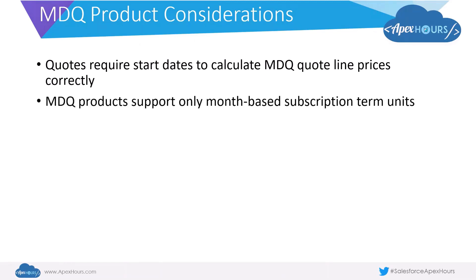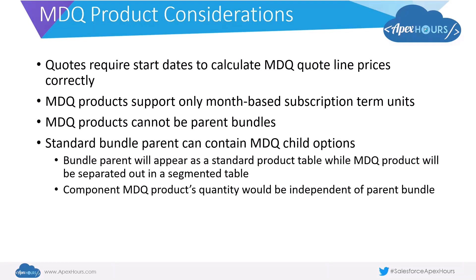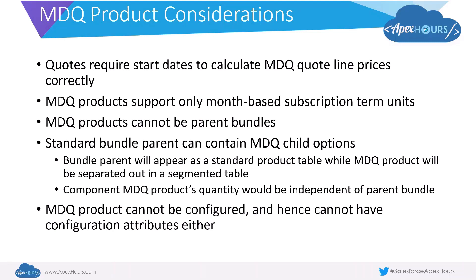Next, a very important consideration: MDQ products cannot be parent bundles, which means you cannot have product options associated with them. They must be either standalone products or a child option of another standard bundle parent. If used as a child option, the bundle parent will appear in the standard product table while the MDQ product is separated out in the segmented table, with a link referring back to the original bundle. Also, if the MDQ product is set as a child option and configured as a component, its quantity will be independent of the parent bundle quantity and will not multiply natively. Additionally, MDQ products cannot be configured, and therefore cannot have configuration attributes tied to them.